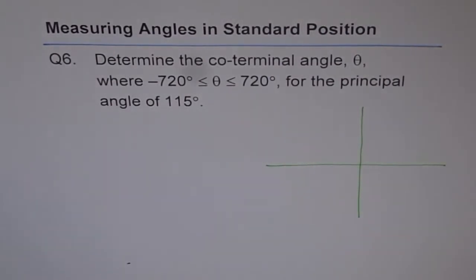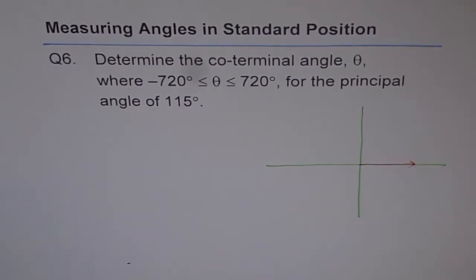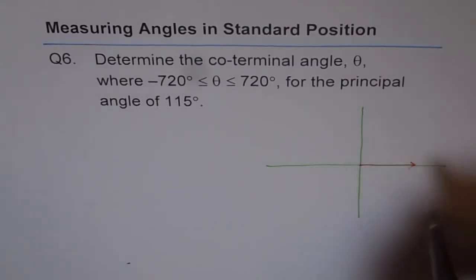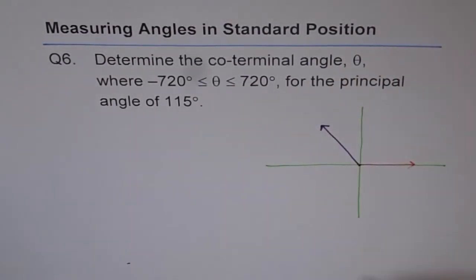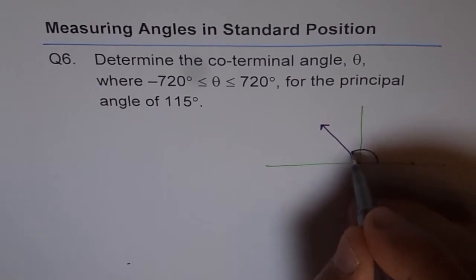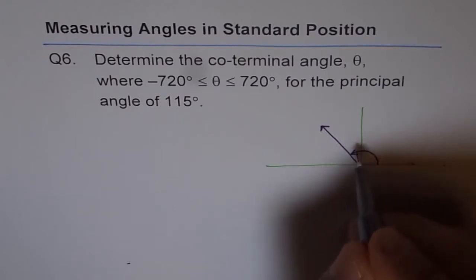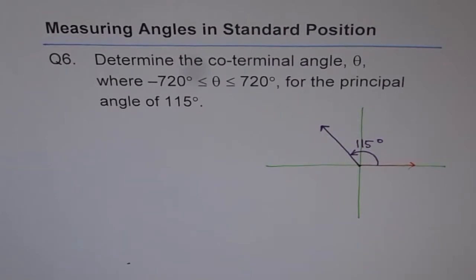Let's say that's our coordinate system. When dealing with standard position, the initial arm is always towards the positive x-axis, and your terminal arm will be at an angle of 115 degrees. Since 115 is more than 90 and less than 180, it looks like this. The angle from the initial arm to the terminal arm counterclockwise is your principal angle of 115 degrees.